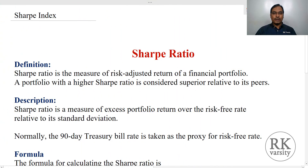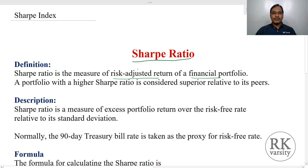First, let me explain the concept of a Sharpe Index or Sharpe Ratio. A Sharpe Ratio is a risk-adjusted return of a portfolio. The return that you receive on a particular security is adjusted with its risk to calculate the index value — that is the Sharpe Index value. The portfolio with a higher Sharpe Ratio is considered superior relative to its peers.